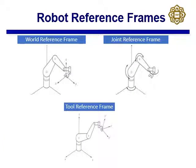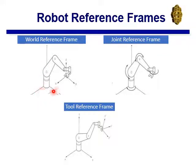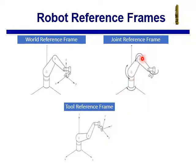The robot reference frame can be defined in various ways. First is the base reference frame, also called the world or global reference frame, which is typically defined with respect to the robot's base. A joint reference frame can also be defined — each joint can have its own XYZ frame of reference.